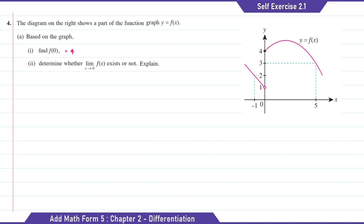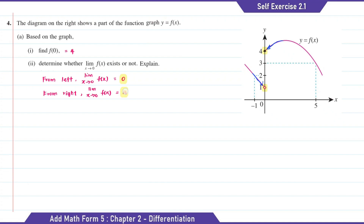Question 2: determine whether the limit of f(x) when x approaches 0 exists or not. Explain. So here x can approach 0 either from the left-hand side or from the right-hand side. If the limit value when x approaches 0 from the left or from the right are the same, then the limit exists. When x approaches 0 from the left-hand side, the answer is 0. But when x approaches 0 from the right-hand side, the answer is equal to 4. As the limit values are not the same, then the limit does not exist.